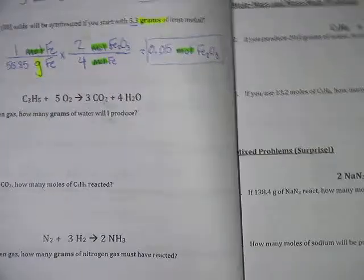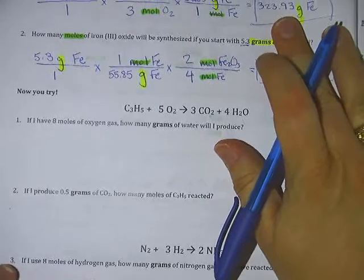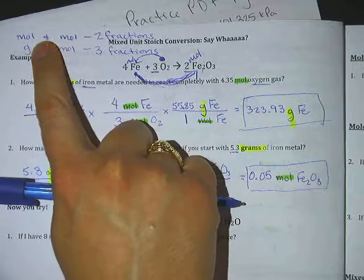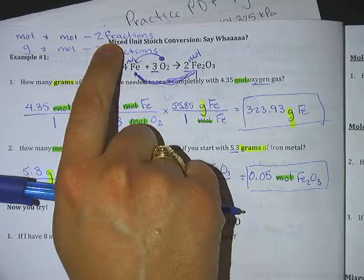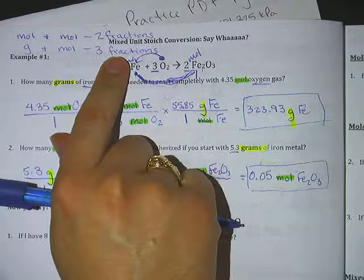So, looking at page 10, I'm going to help you remember how to do this. And we said last class that how many fractions you need depends on what they give you. So if they give you moles and moles, it's two fractions. If it's grams and moles, it's going to be three fractions.